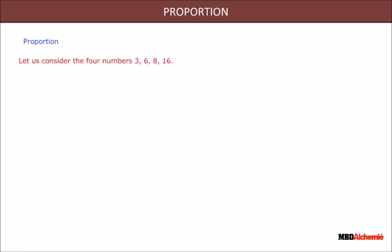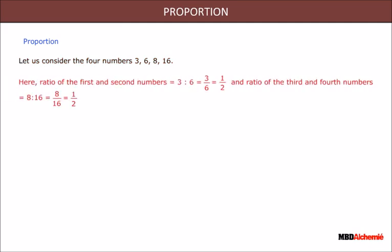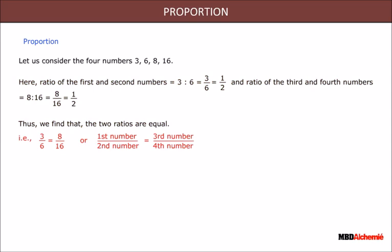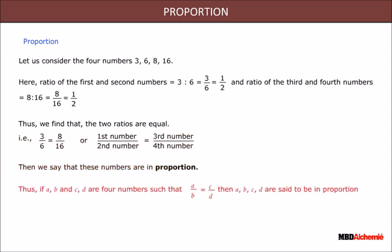Proportion: let us consider the four numbers 3, 6, 8, and 16. The ratio of the first and second number is 3:6, which equals 3/6, that is 1/2. The ratio of the third and fourth numbers is 8:16, which equals 8/16, that is 1/2. Thus the two ratios are equal — the ratio of the first and second number equals the ratio of the third and fourth number, and we say these numbers are in proportion.